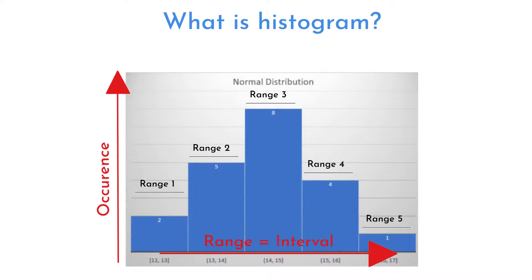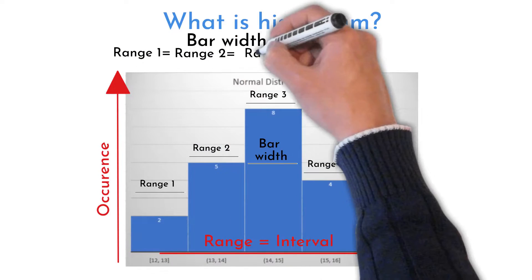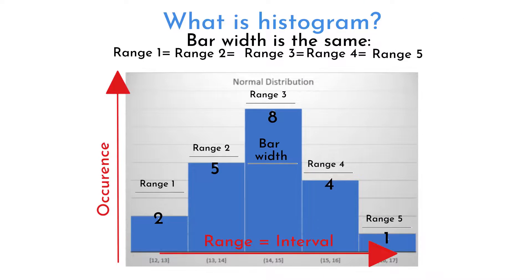Both values define size of bars. Bar width is set by range values. Range width is equal across x-axis. Each number within the range is counted in particular range. Counts of numbers within the range defines bars height.